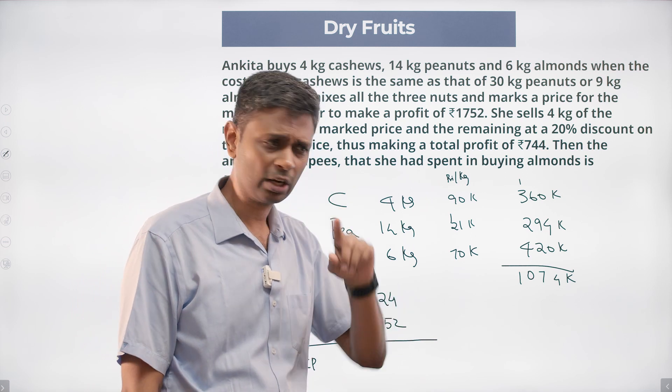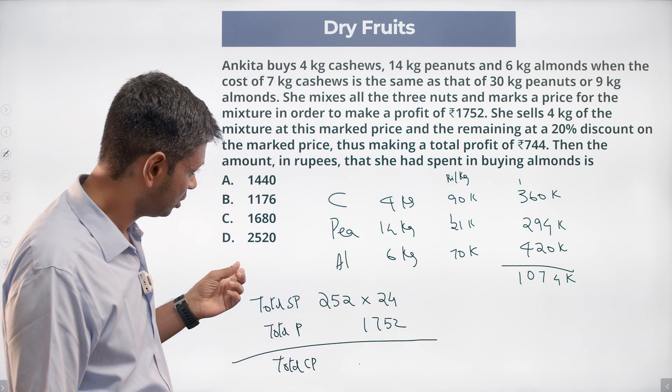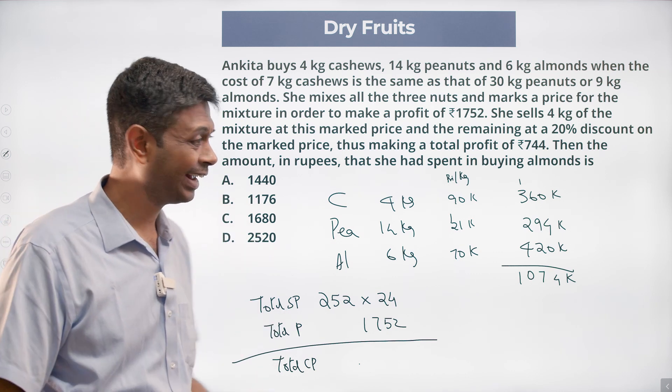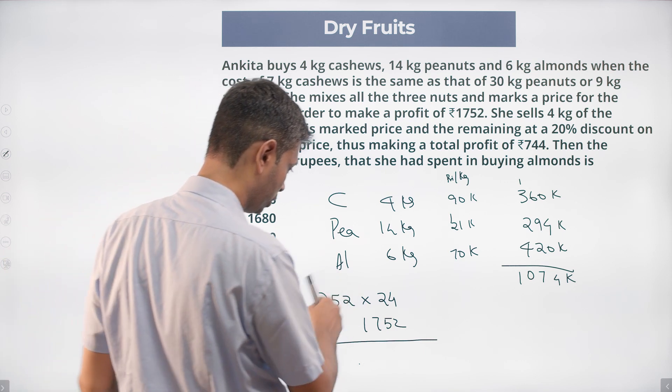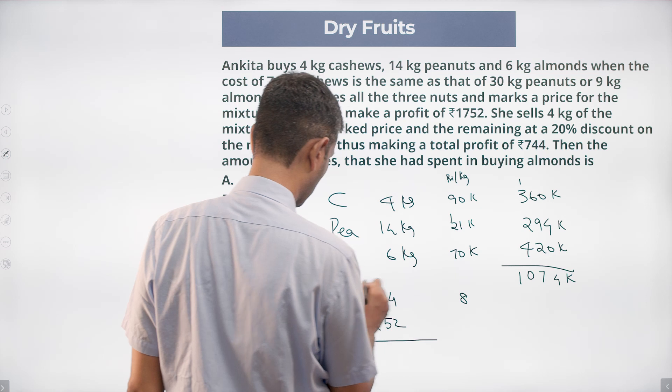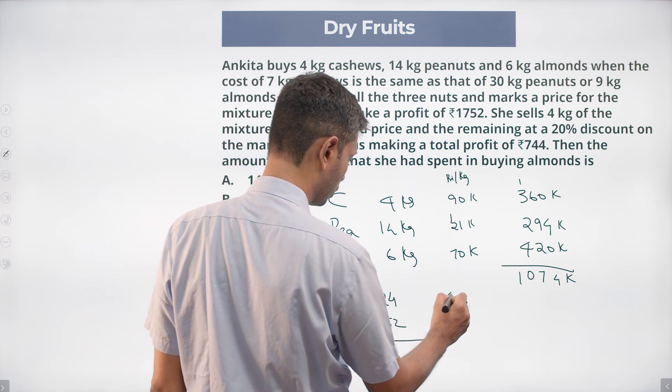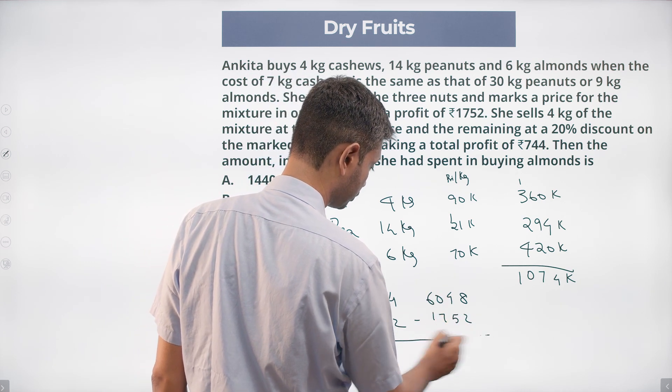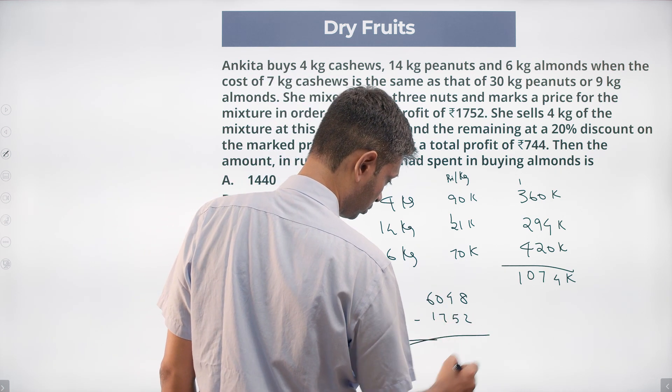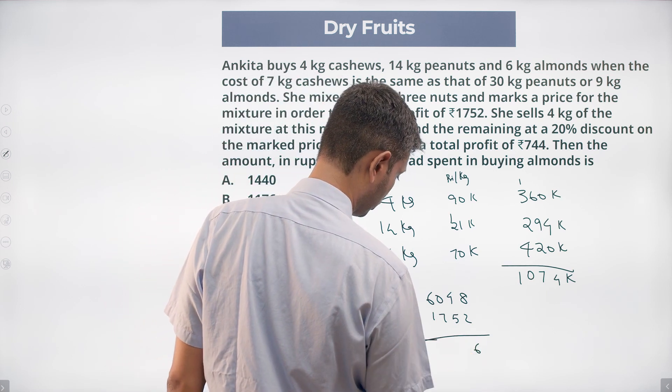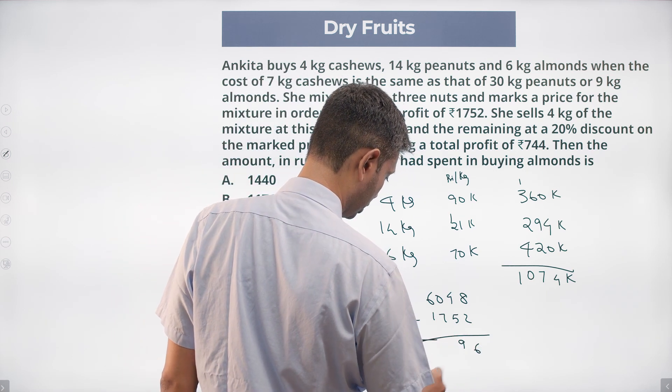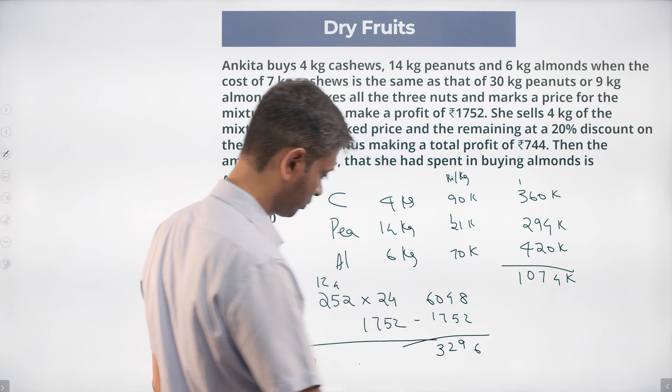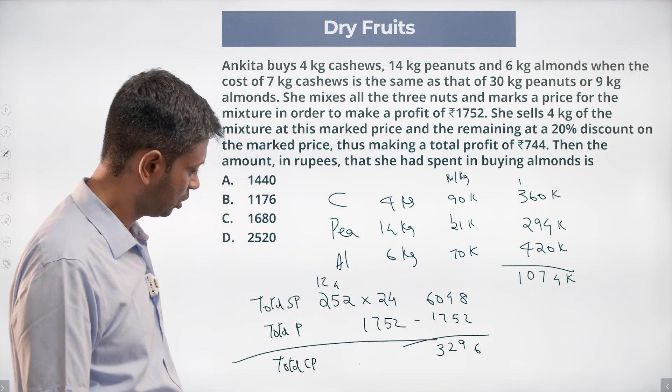So let's figure this out. 252 into 24, 24 twos are 48, 84, 120, 124, 412, 48, 60, 6048 minus 1752. This is 8 minus 2 is 6, 8 minus 5 is 9, 9 minus 7 is 2, 4 minus 1 is 3. Total cost price is 4296.